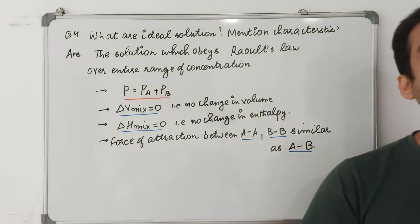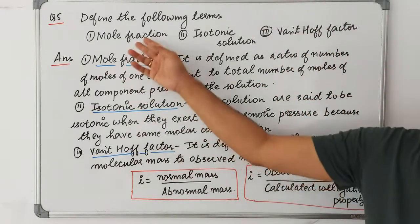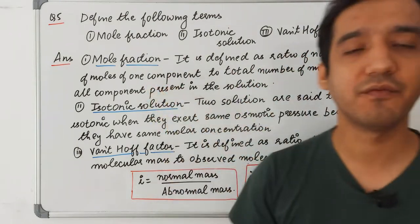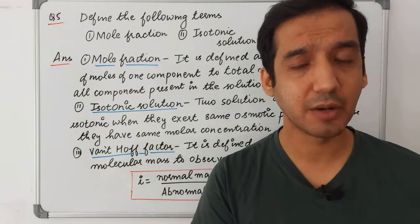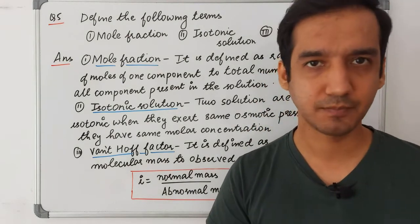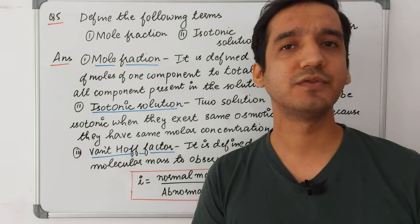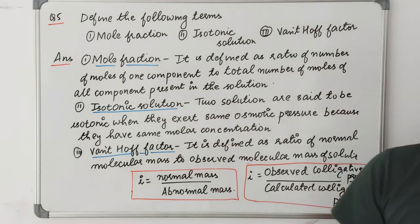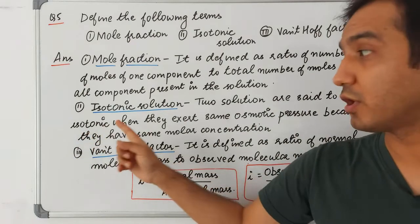Question 5: Define mole fraction, isotonic solution, and van't Hoff factor. Mole fraction is the ratio of the number of moles of one component divided by the total number of moles of all components in the solution. For solute: mole fraction = moles of solute ÷ (moles of solute + moles of solvent).